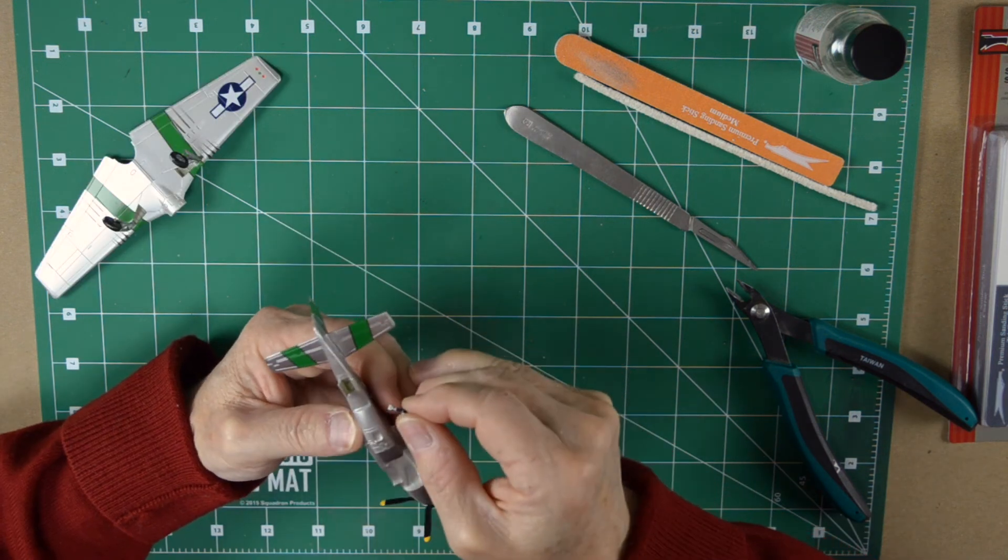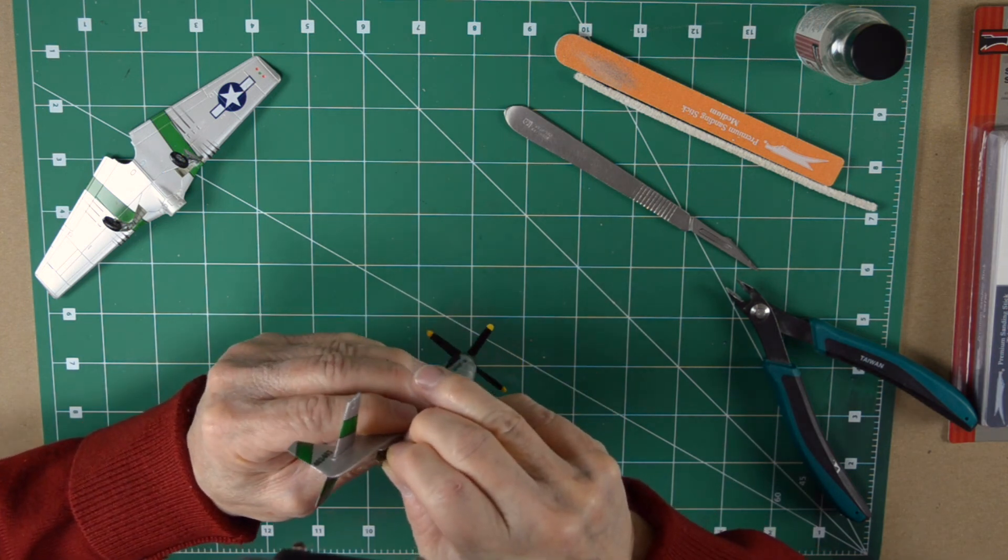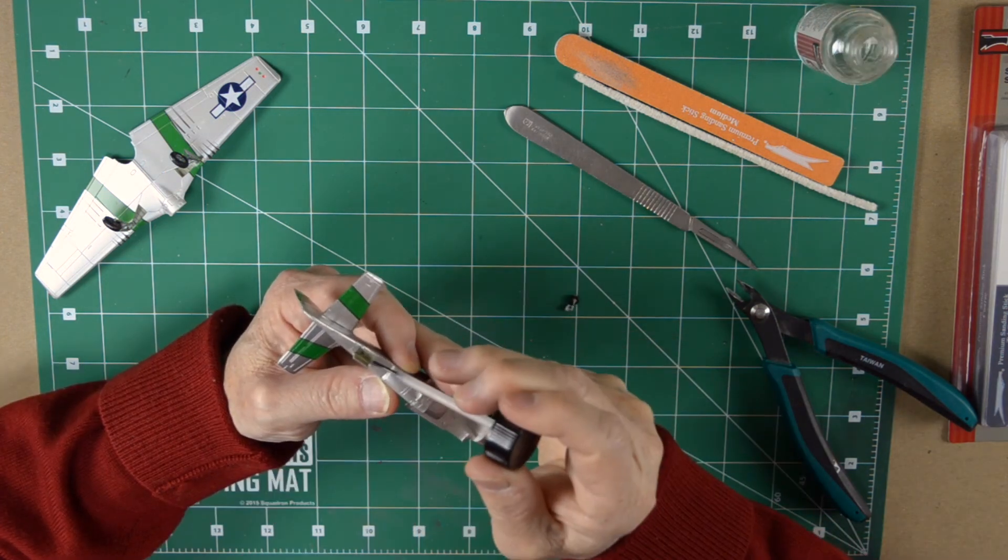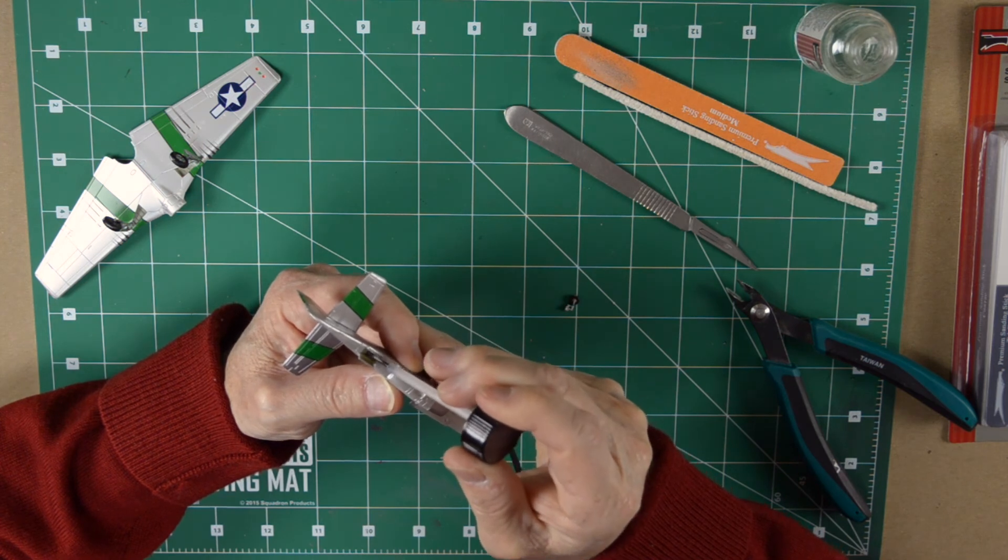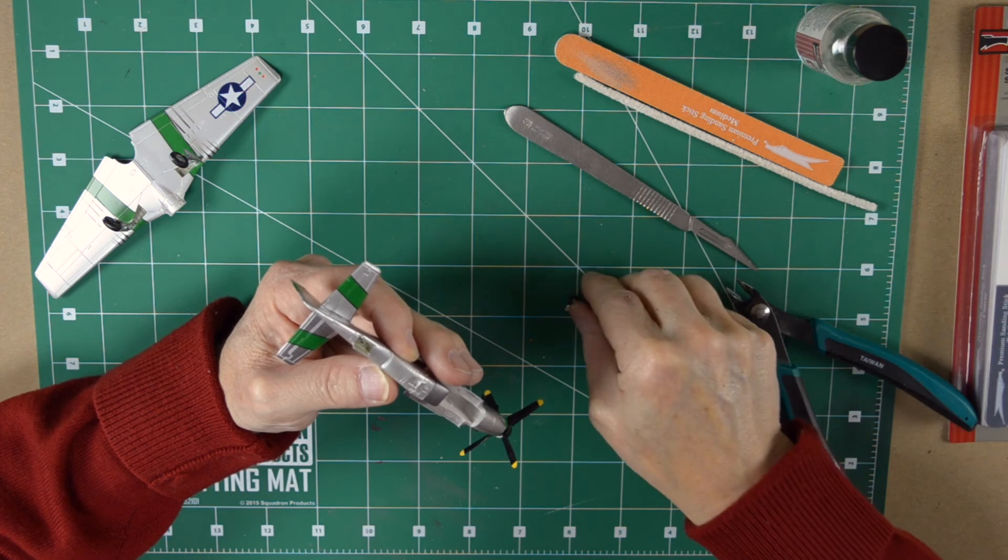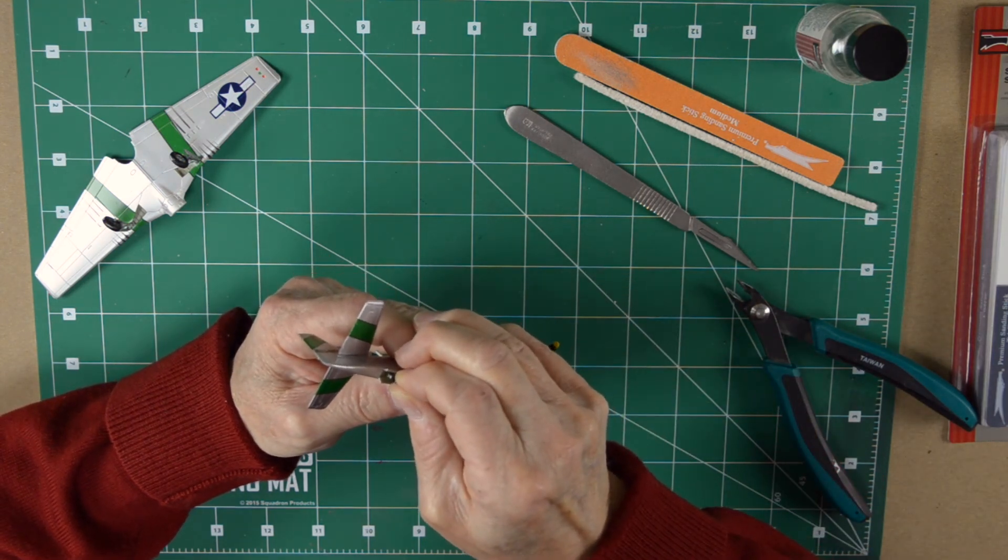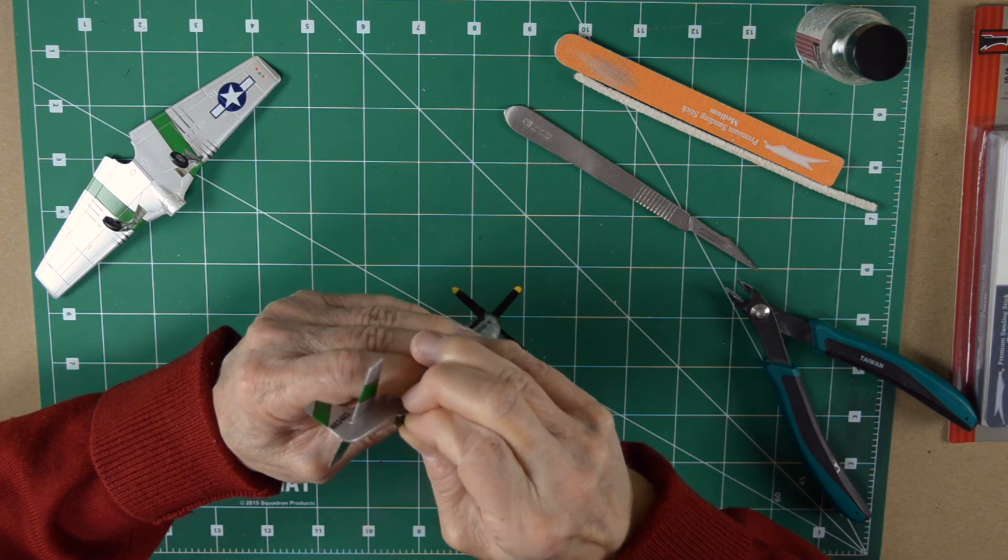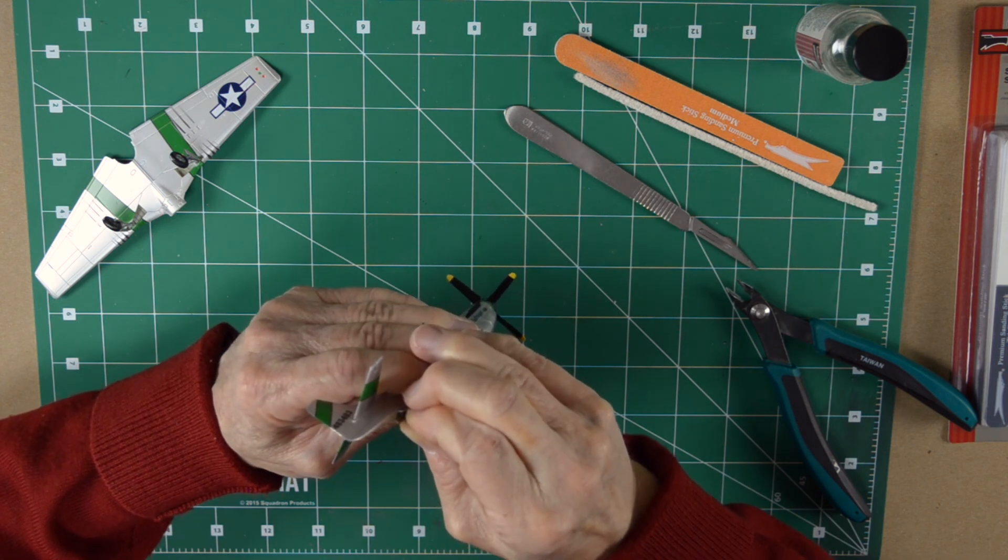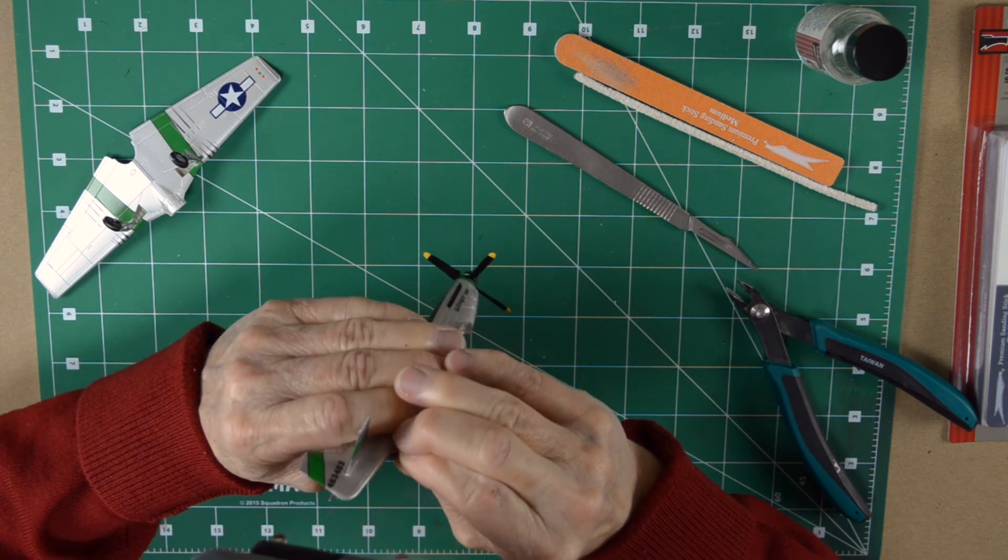Now comes the tail wheel that we will fit on. Again, doing our dry fit procedure. It fits nice and snug. But I will apply, again, the plastic weld. The gear needs to be the strongest points, of course, because all the weight is resting on the gear. So you definitely want to use plastic weld so that it is more permanent. And you want to make sure that it's positioned perfectly up and down, which it is. Looks like a good fit.